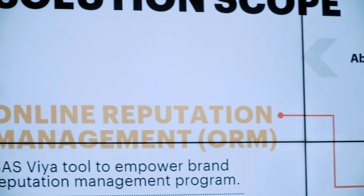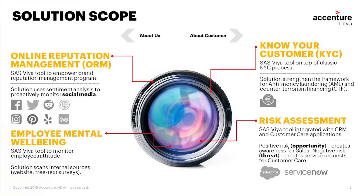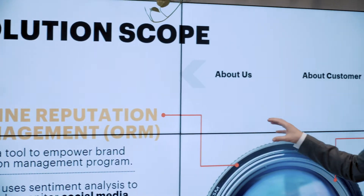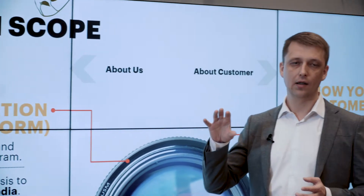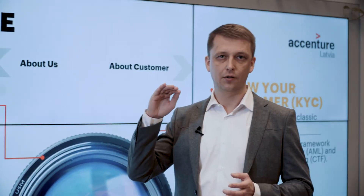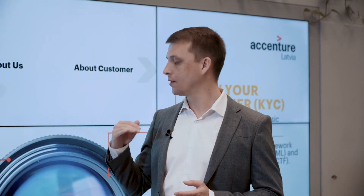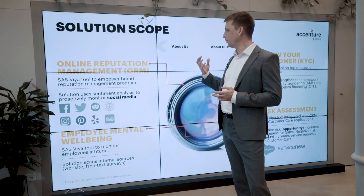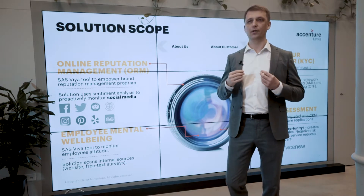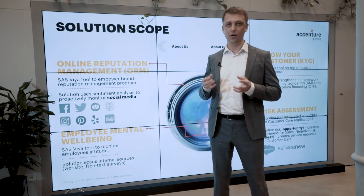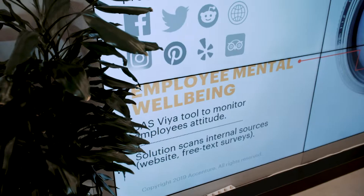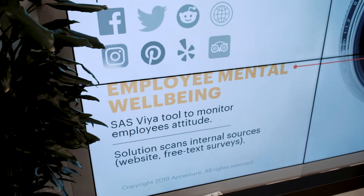Scenario number one is online reputation management for the marketing team. The Spider catches information from external sources, analyzes topics, keywords, and sentiment analytics, and then generates an outcome which shows us the opinion about our brand.